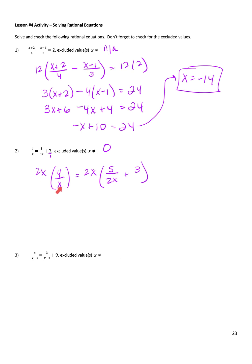On the left, the x's cancel, and I'm just left with 2 times 4, which is 8. On the right, I distribute the 2x to the first term — the 2x's cancel and I just have a 5. Then 2x times 3 is 6x. So 8 minus 5 is 3. Divide both sides by 6, and I get x equals 1 half.